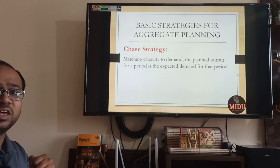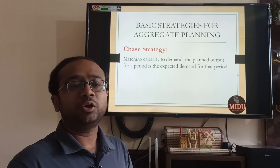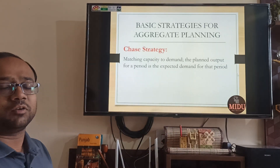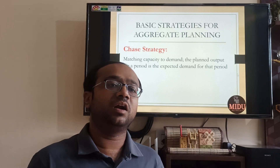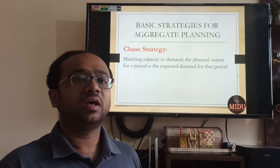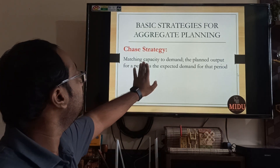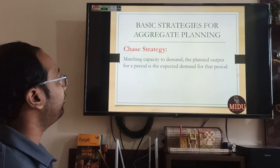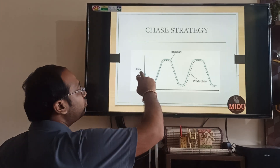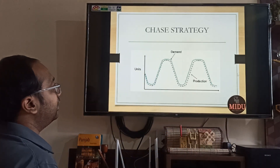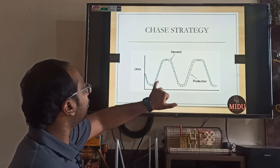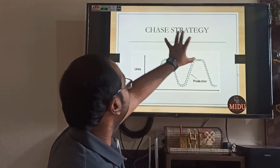Opposed to this now comes the Chase Strategy. As the name suggests, you are chasing something — just like in cricket you chase a target score. Here you match capacity to demand: the planned output equals the expected demand for the period. If January demand is 600, you make 600; next month it is 1000, you make 1000; then it drops to 800, you make 800. Your production curve follows the demand curve — this is the Chase Strategy.